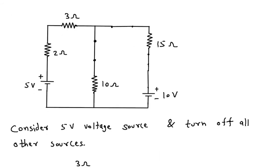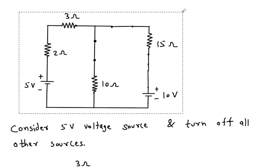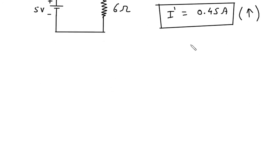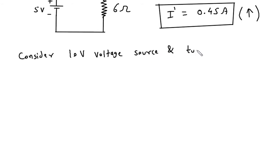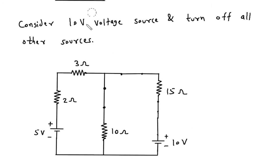Now next we have to consider the 10 volt voltage source and turn off all other sources. Now if we turn off the 5 volt voltage source, it will be a short circuit. According to the polarity of this 10 volt voltage source, the current will flow in this direction. Let's say this is total current I and this is I double prime.